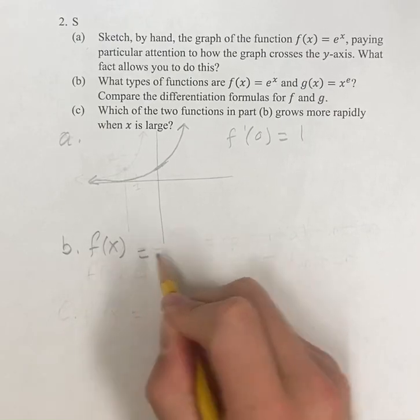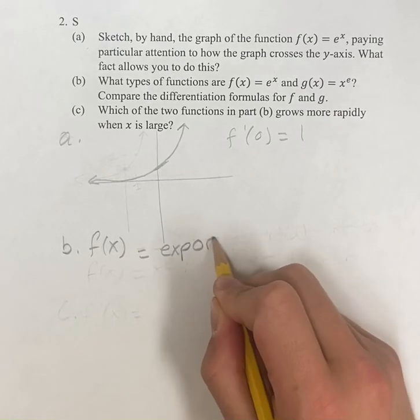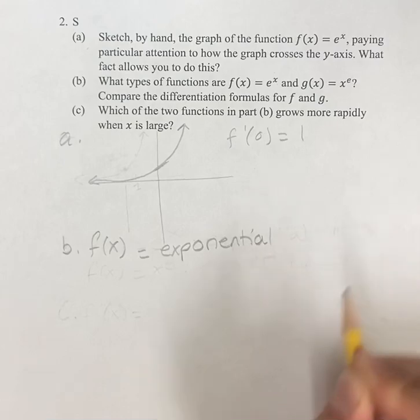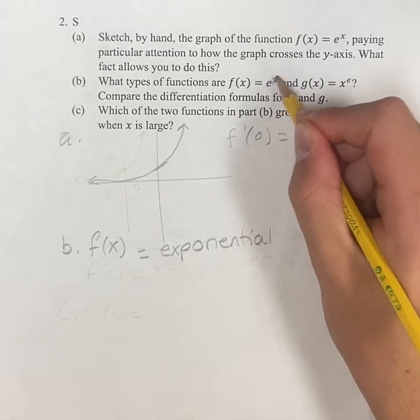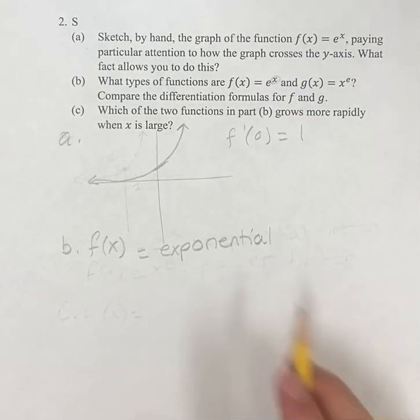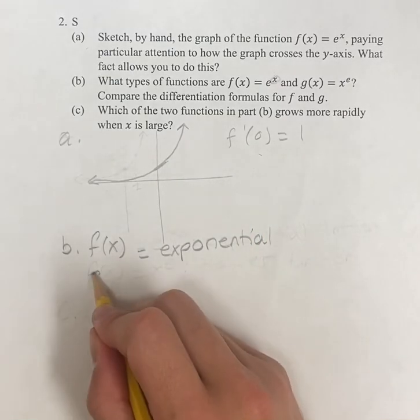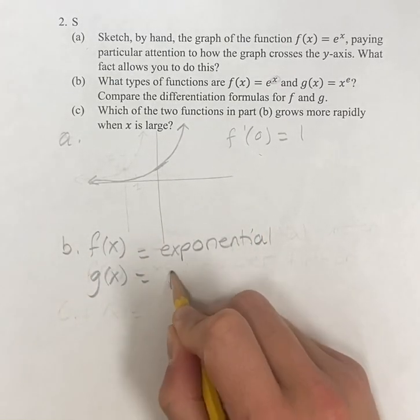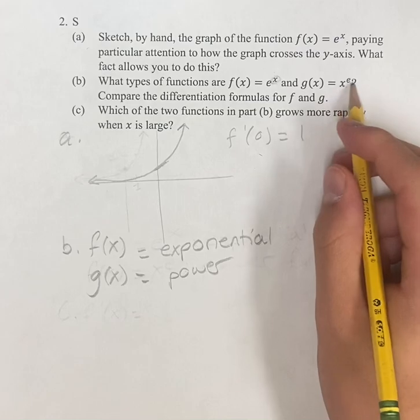Well f of x is an exponential function because the variable is in the exponent, and g of x is a power function because you have a variable raised to a constant.